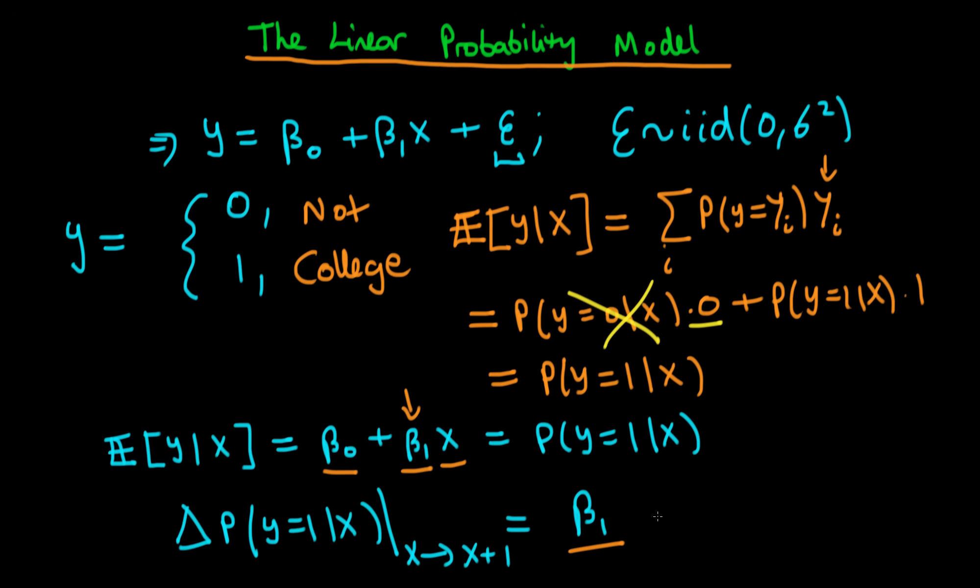So what does beta naught mean in this context? Beta naught, well, if you were to imagine that x was zero, so this second term would then disappear, then that would represent the probability that y equals one given x equals zero. So the probability that y equals one given x is zero would be given by beta naught.